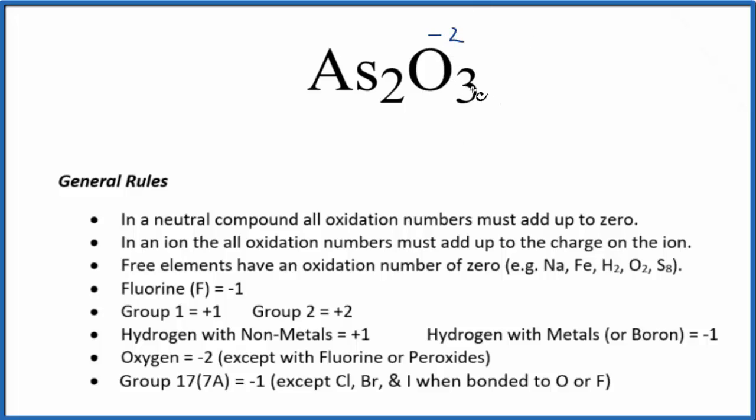So this whole side here, three times minus two, that's minus six. In order to get a positive six over here and have zero since it's a neutral compound, this is going to have to be plus three. Two times three plus is plus six, three times minus two is minus six.